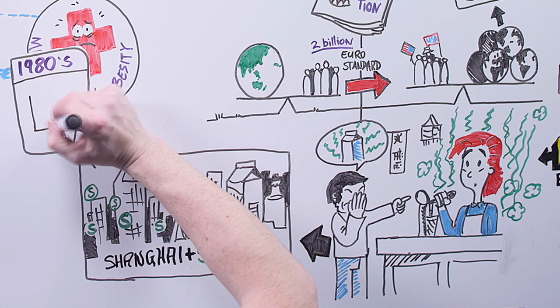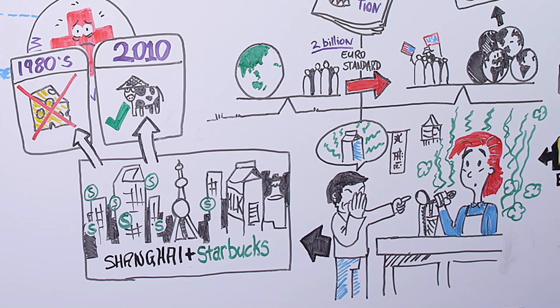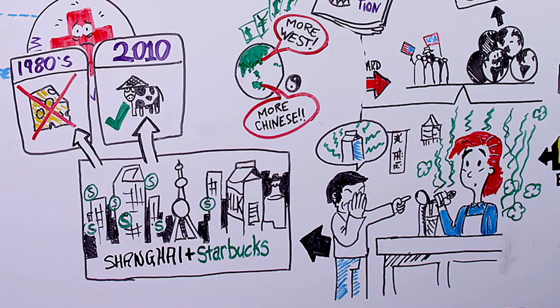In the 1980s, the Chinese didn't eat dairy, but by 2010, they were necking down pints of milk. What happened was they had got rich. And once they got rich, the Chinese middle class wanted to be like the Western middle class.